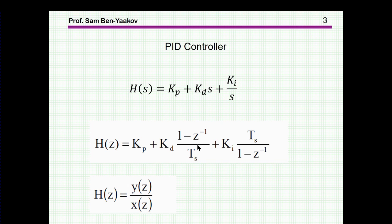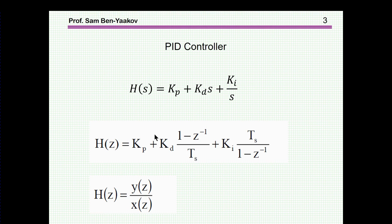This is a PID in general. Now, in the discrete representation from the S domain into the Z domain, we have something very similar. We have a proportional constant and a derivative constant. However, S is now replaced by the term (1 minus Z⁻¹), where Z⁻¹ is a delayed sample — one step delay — divided by the sampling time. And here we have the integral constant with (1 minus Z⁻¹). This is the Z domain representation of the PID controller.